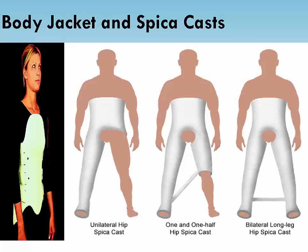Body casts, which cover the trunk and sometimes the neck, head, or limbs, are rarely used today and are most commonly used in small children who cannot comply with a brace or in cases of radical surgery. A body cast encasing the trunk with shoulder straps is usually referred to as a body jacket. Nursing assessment should include observation of respiratory status, bowel and bladder function, and areas of pressure over bony prominences. The nurse should reposition the patient every two hours while the cast is drying.